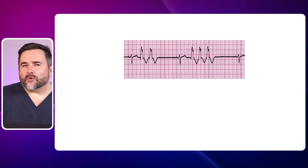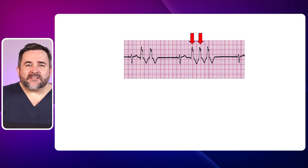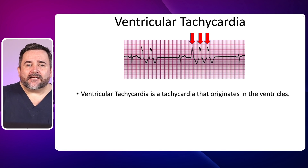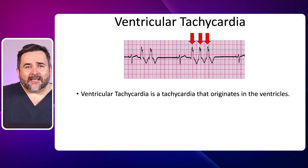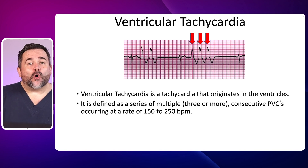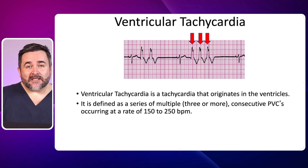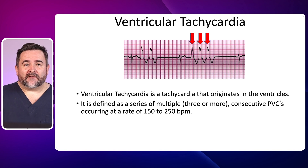What would you call this ECG? Here we see three PVCs in a row — yes, it's ventricular tachycardia. Ventricular tachycardia is a tachycardia that originates in the ventricles. It is defined as three or more consecutive PVCs in a row occurring at a rate of 150 to 250 beats per minute. This is called a run of VT.